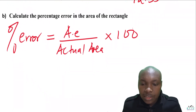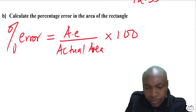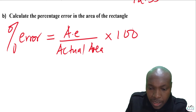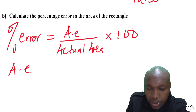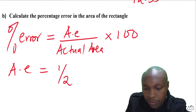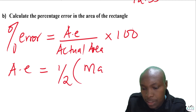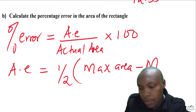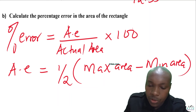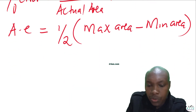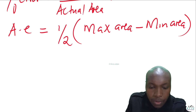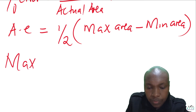The first thing is to get the absolute error in the calculation of the area. Because area involves multiplication, the absolute error will be given by one half multiplied by the quantity: maximum area minus minimum area. So we need to find both the maximum and minimum area.